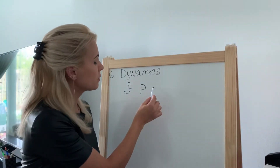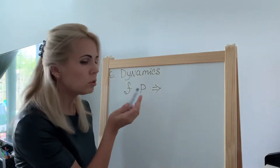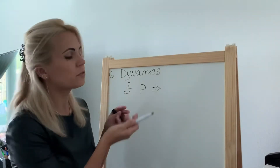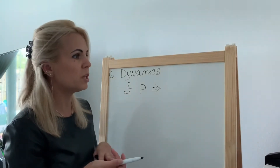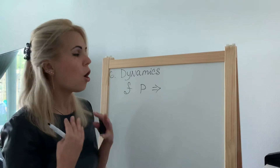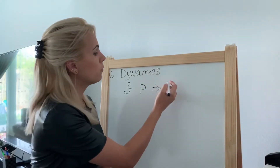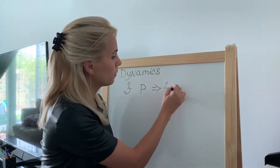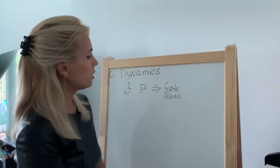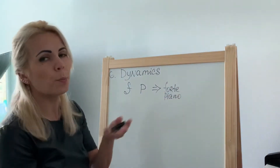Forte and piano are two terms that came to us from the Italian language. All the terms you see in music sheets — starting from dynamics, speed, and extra marks explaining how to read the music sheet — all of them are written in Italian language, so we use Italian terminology. Forte means loud and open.